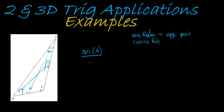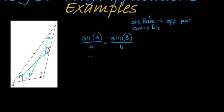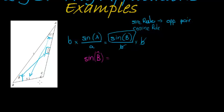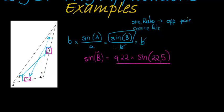I have my angles at the top and my side lengths at the bottom. I'm trying to find the angles, so sine of A over A is equal to sine of B over B. I'm going to multiply both sides by B so that sine of B will be given by B times sine of A, divided by a. That's 9.22 times sine of 22.5, divided by 5.1.